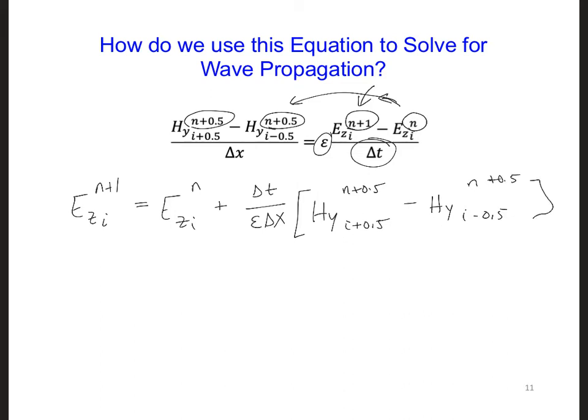So in words, this equation says the future value of Ez at position i is equal to the value of Ez at the same position but one time step earlier, plus a coefficient times the difference between the two neighboring Hy's one-half time step earlier.